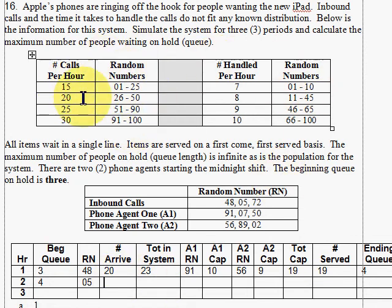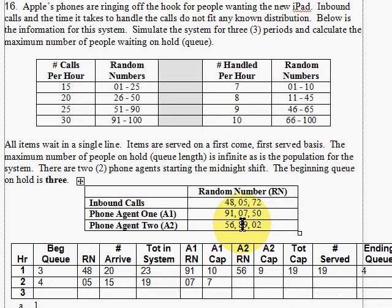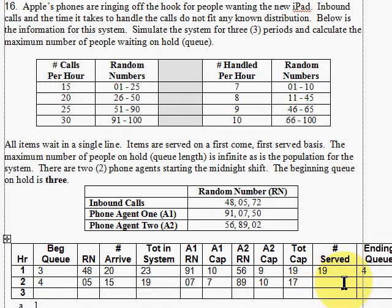A random number of 05 falls in the lowest range, so 15 people call in. Four beginning plus 15 gives us 19 total in the queue. Agent one's random number this time is 07, which means agent one can handle 7 calls. Agent two's random number is 89, which means agent two can handle 10 calls. Total capacity is 7 plus 10, or 17. We have 19 total waiting but can handle 17, so we serve 17, leaving 2 people waiting. We bring 2 down to start the last period.